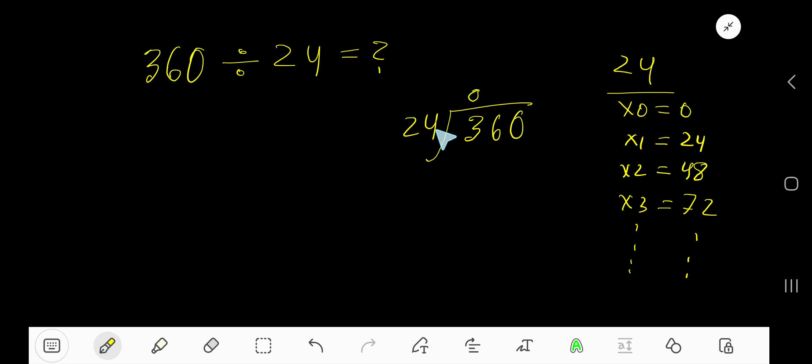0 times 24 is 0. Bring down the next digit to get 36. 24 goes into 36 how many times? 2 times would be 48, which is greater, so 1 time. 1 times 24 is 24.